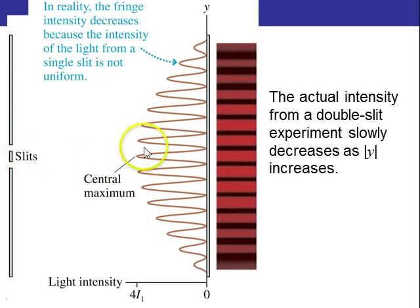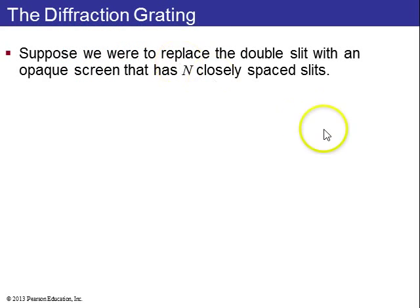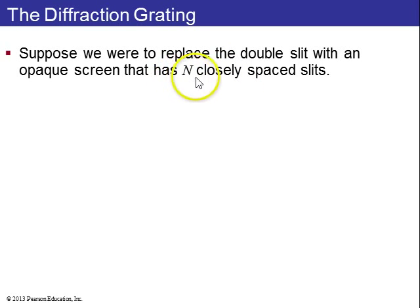What we've ignored here is that these slits are each single slits that will spread out and diffract. So in reality, the pattern is the cosine-squared double-slit function convolved with a broad central maximum from single-slit diffraction. Now the next step is to do 3, 4, 5, and in general N slits.